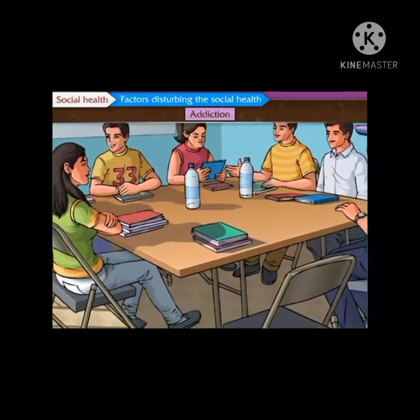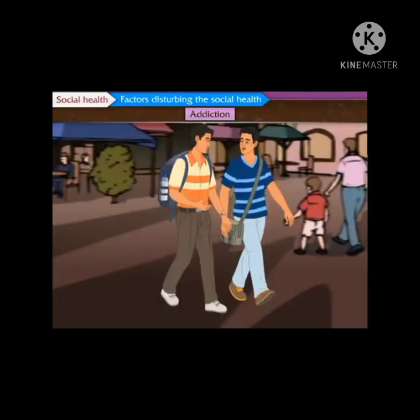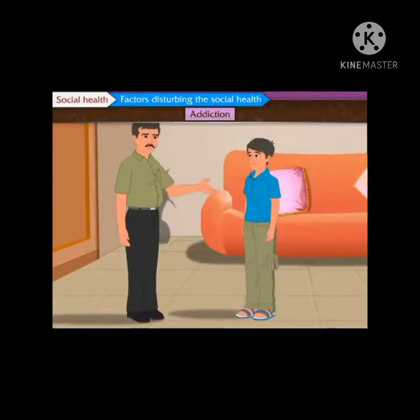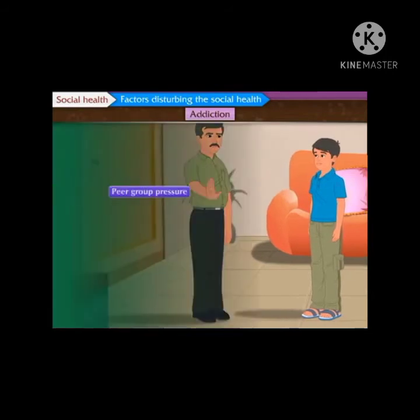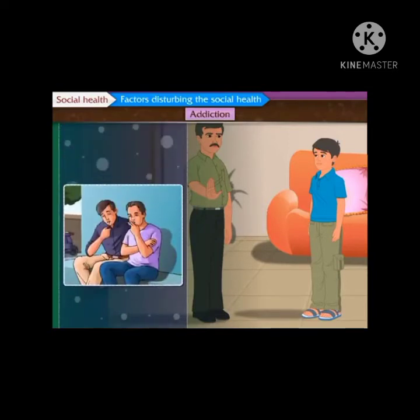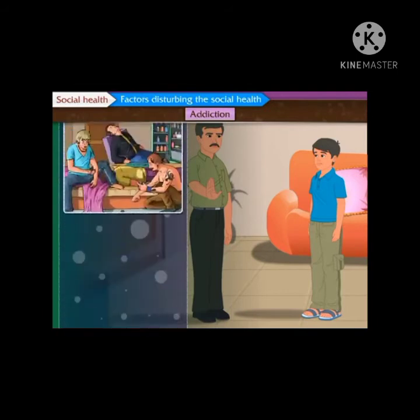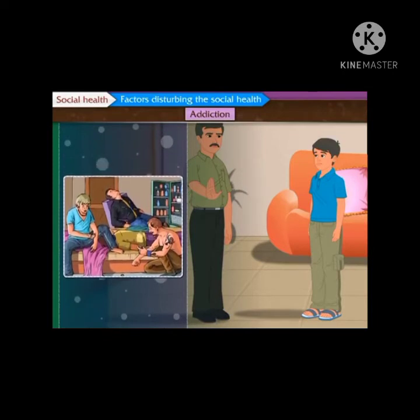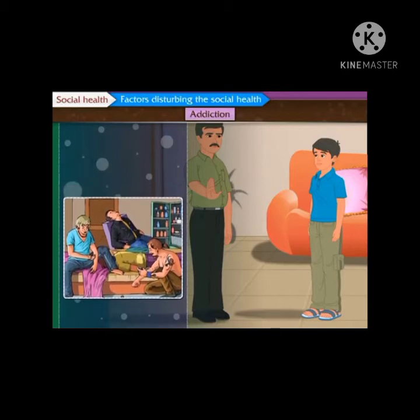Let us now discuss another factor disturbing social health: addiction. In the case of adolescents, peer group influence is much stronger. Adolescents always prefer the company of friends and follow their good or bad habits instead of following the advice of parents and teachers. Due to peer group pressure, as a symbol of high standard living or as an imitation of elders, adolescents in their early age try tobacco, cigarettes, gutka, alcoholic drinks, drugs, etc. Casual consumption of these deadly substances increases day by day.